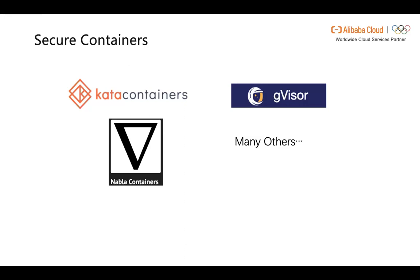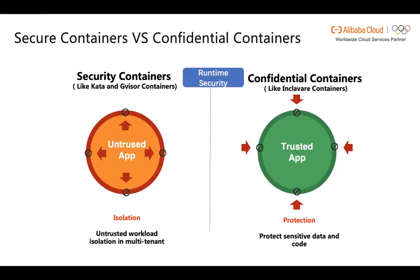Kata Container has the speed of containers and the security of virtual machines. It's a very successful project and is widely used by many end users. GVisor is another project with a different method to improve container isolation, by providing each container with its own application kernel. GVisor limits the attack surface of the host and other containers. It runs a modified binary and integrates with container orchestration ecosystems such as Docker and Kubernetes. There are many other open source projects as well.